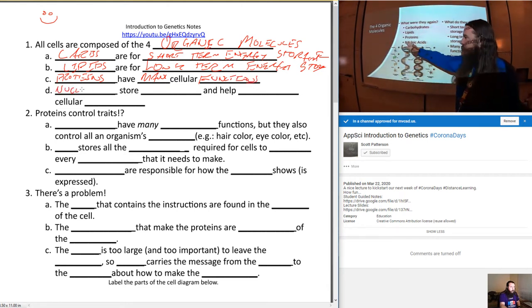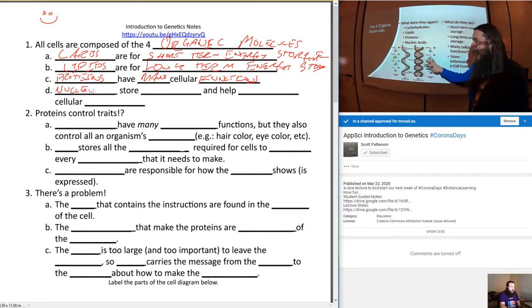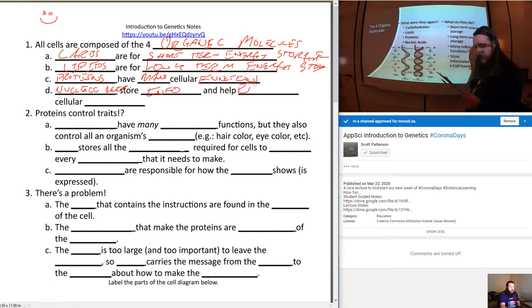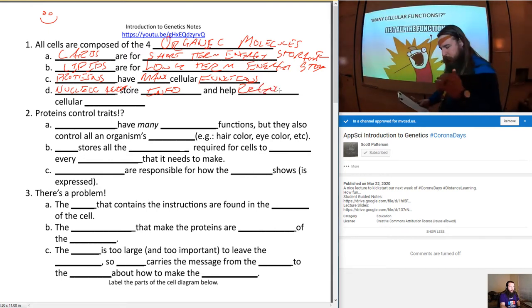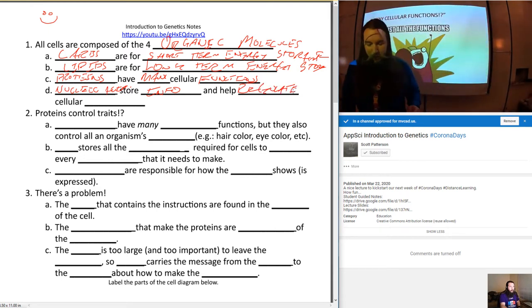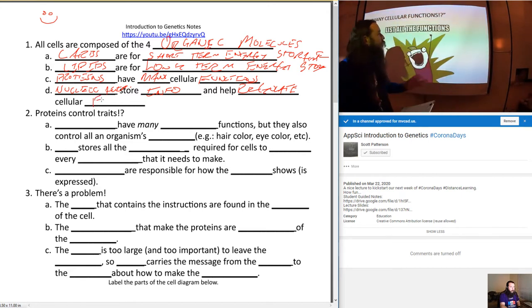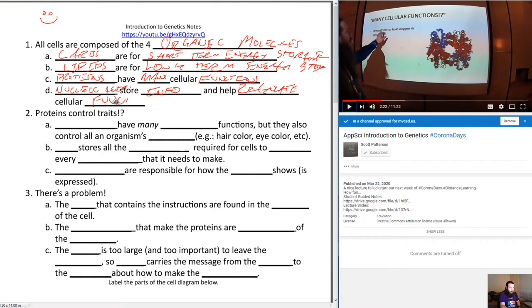Our next one would be lipids with those nice long chains for long-term energy storage. Next up we've got proteins, which have many cellular functions. And then the final one, we also have nucleic acids. You got your DNA, your RNA, both nucleic acids, and they store information and regulate cell functions.